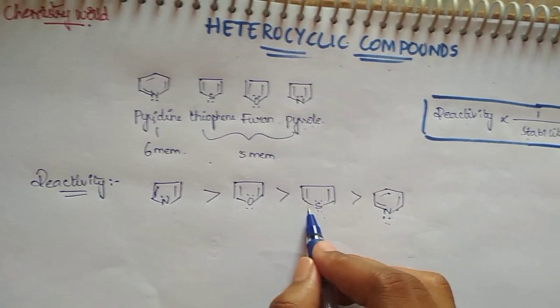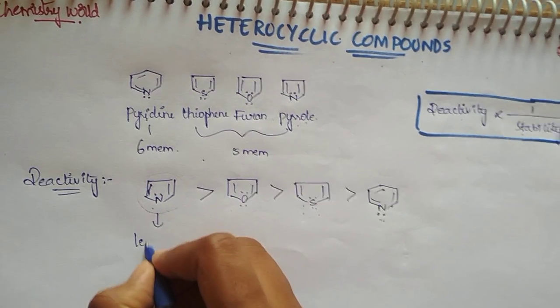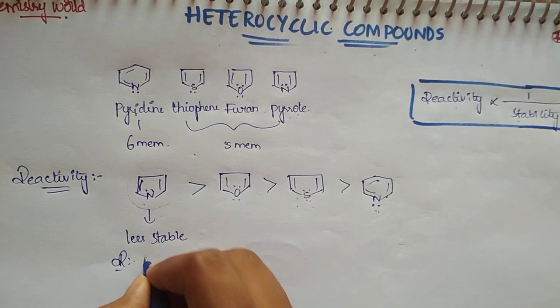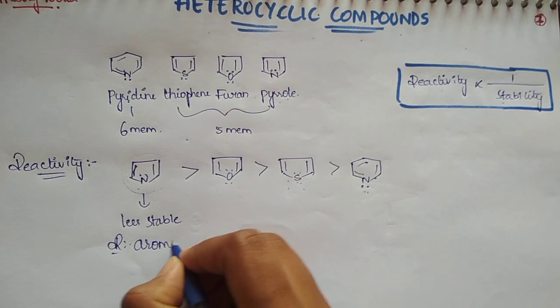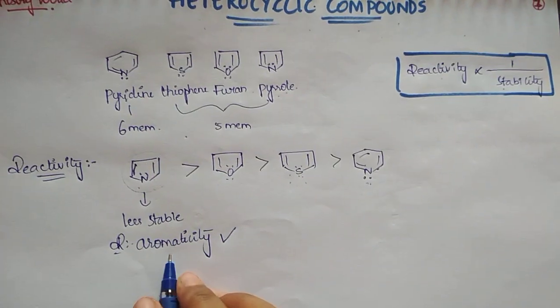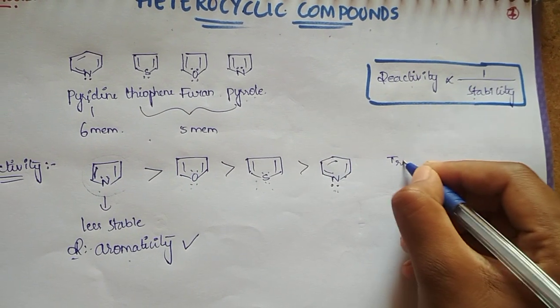Among the five-membered rings, pyrrole is the most reactive due to being less stable. Why is it less stable? The reason is it exhibits aromaticity perfectly. Okay students, so we have a trick here.